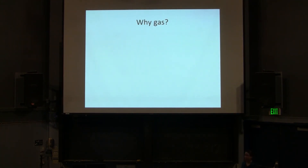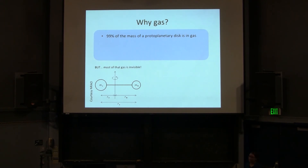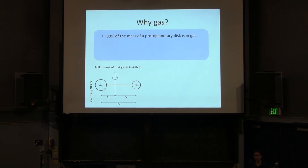A little bit of background to start off. Why gas? First of all, 99% of the mass of a protoplanetary disk is in gas. If you don't have that number memorized before I leave, then I haven't done my job. The interesting thing, though, is that most of that gas is actually invisible. The reason is that molecular hydrogen composes most of the mass of the gas in a protoplanetary disk, and molecular hydrogen has no dipole moment.